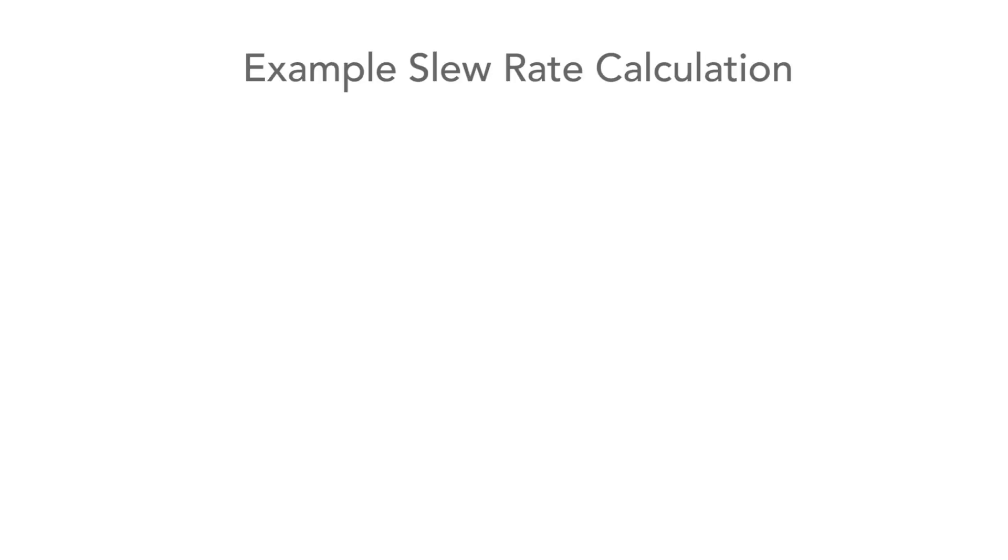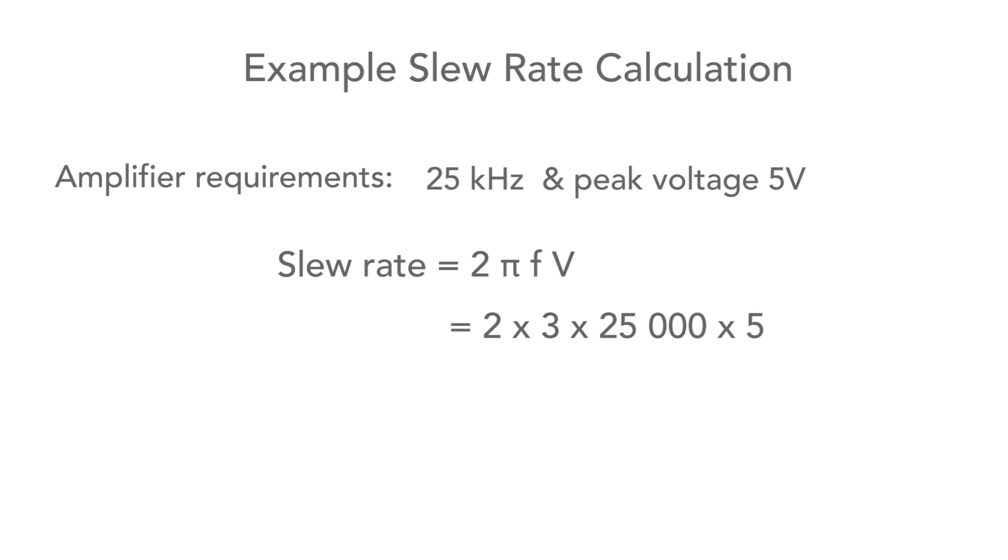The formula is simply 2 pi times the maximum signal frequency times the maximum peak signal voltage. To take an example, it's easy to calculate this. If we want an amplifier that can handle up to 25 kHz with a peak value of 5 volts, we just have to calculate 2 pi. Let's use 3 for pi here, as it's close enough for our calculation. And this is multiplied by 25 kHz, and then 5 for the voltage. And this works out to be 750,000 volts per second, or 0.75 volts per microsecond, to put it in a slightly more manageable format.